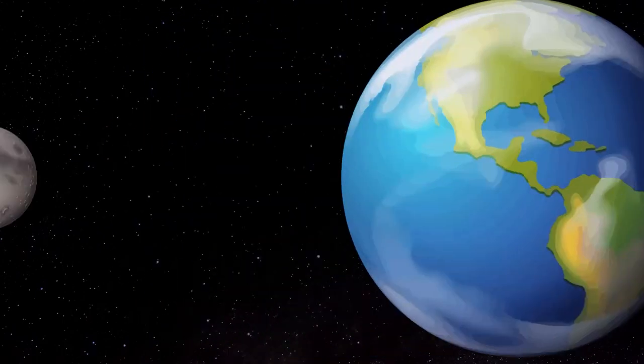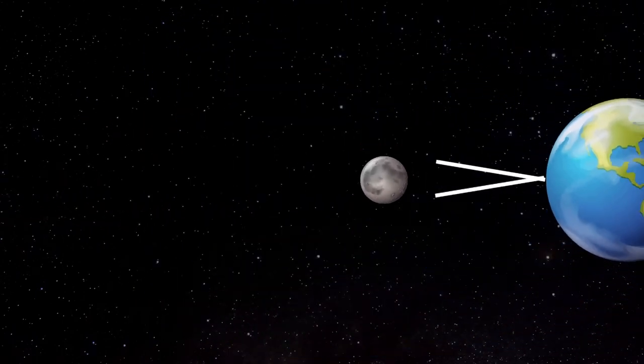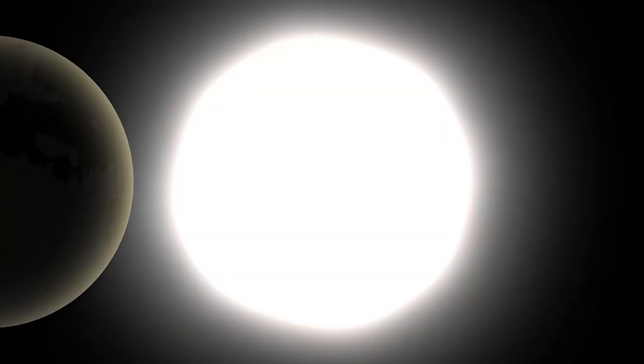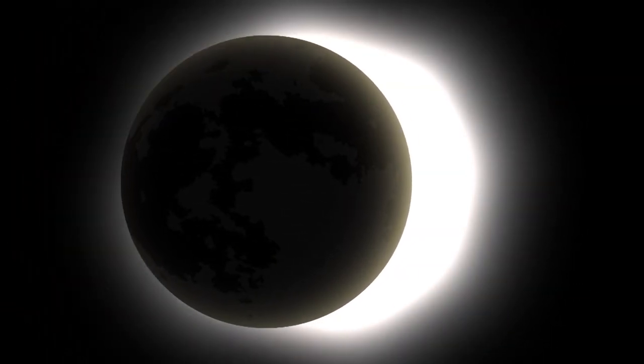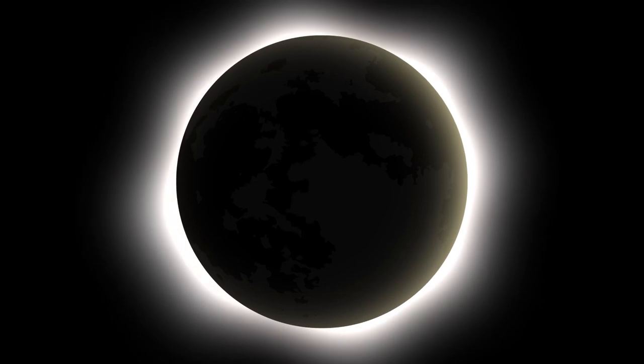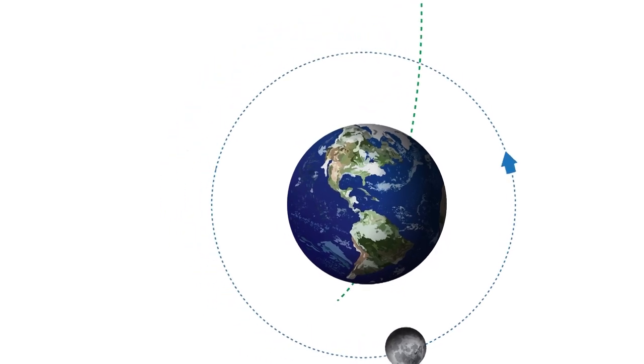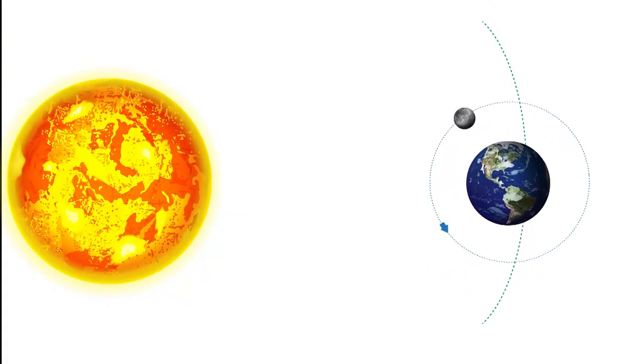So you're probably here because you're curious about the eclipse — you want to know a little more about it, why this happens, how this happens, what you're really seeing, and so on. The eclipse happens when the moon comes in between the sun and the earth, and it blocks the visible face of the sun.